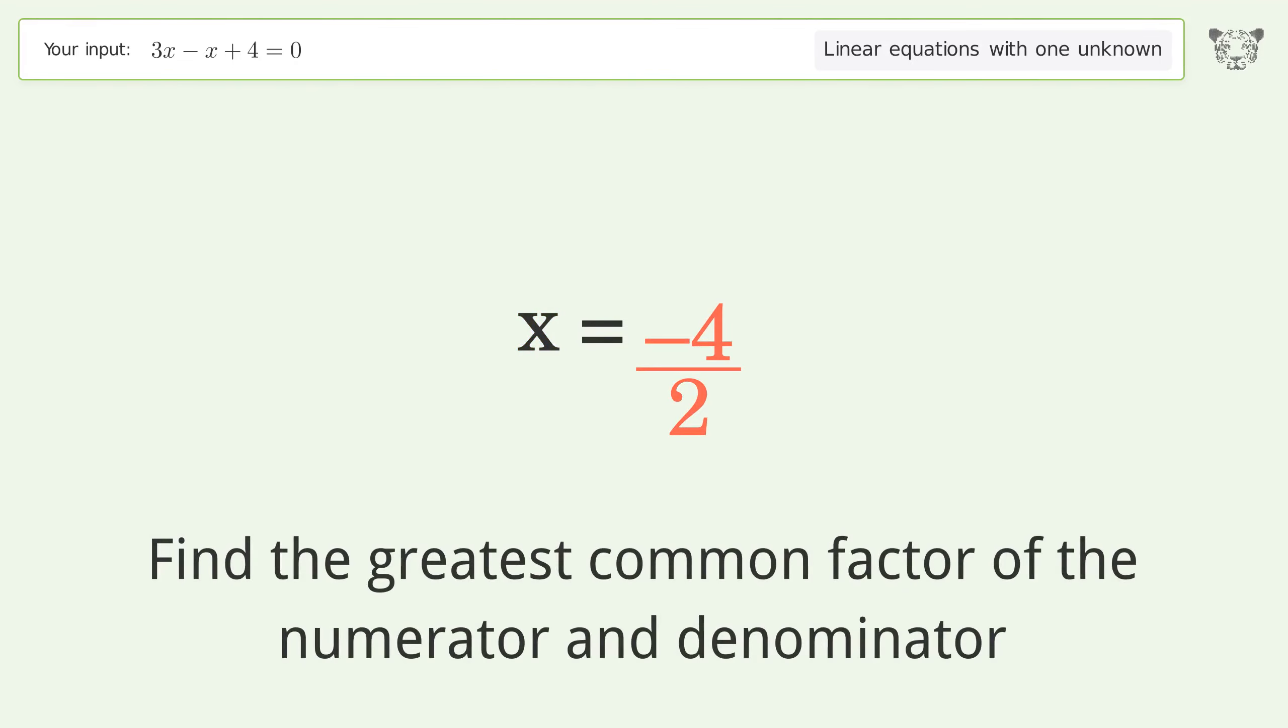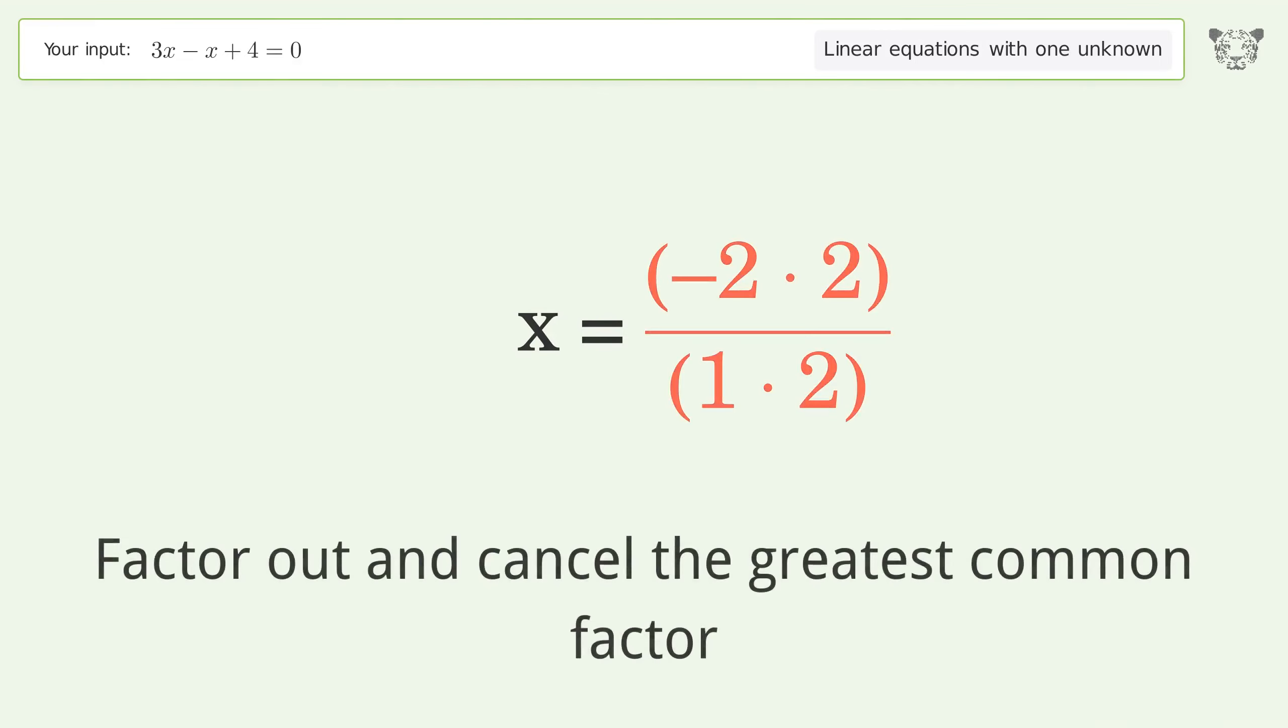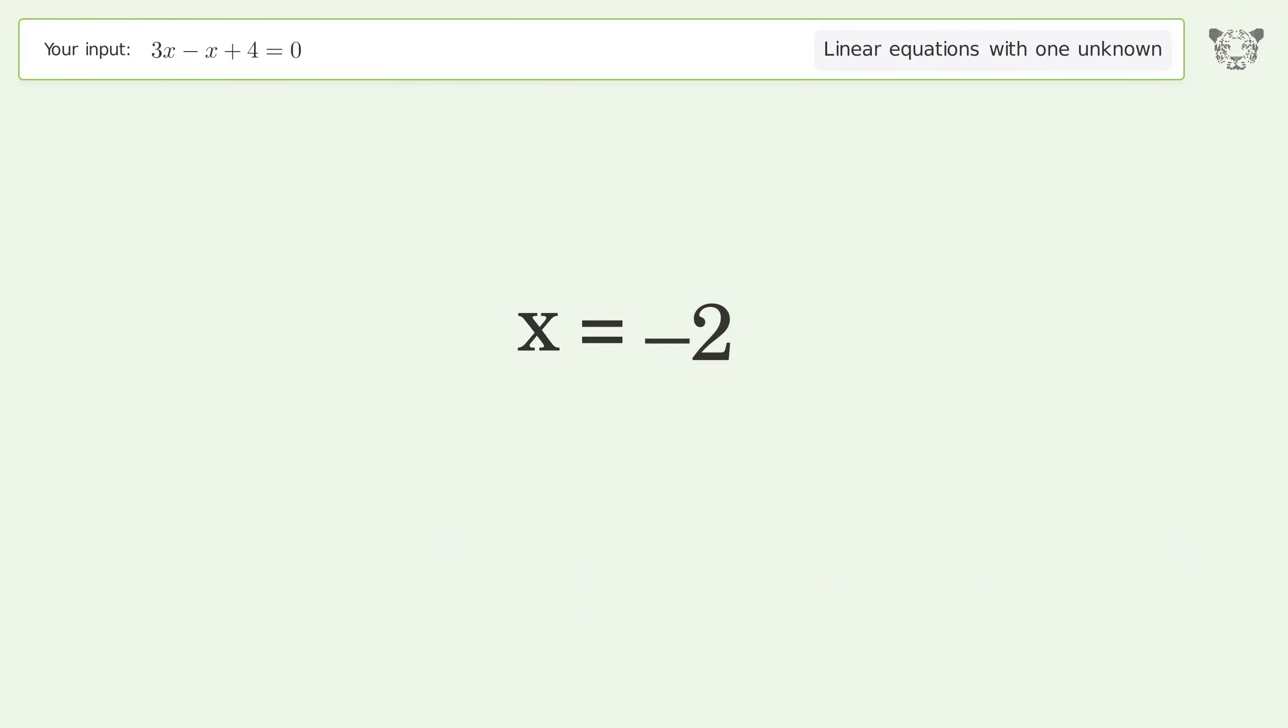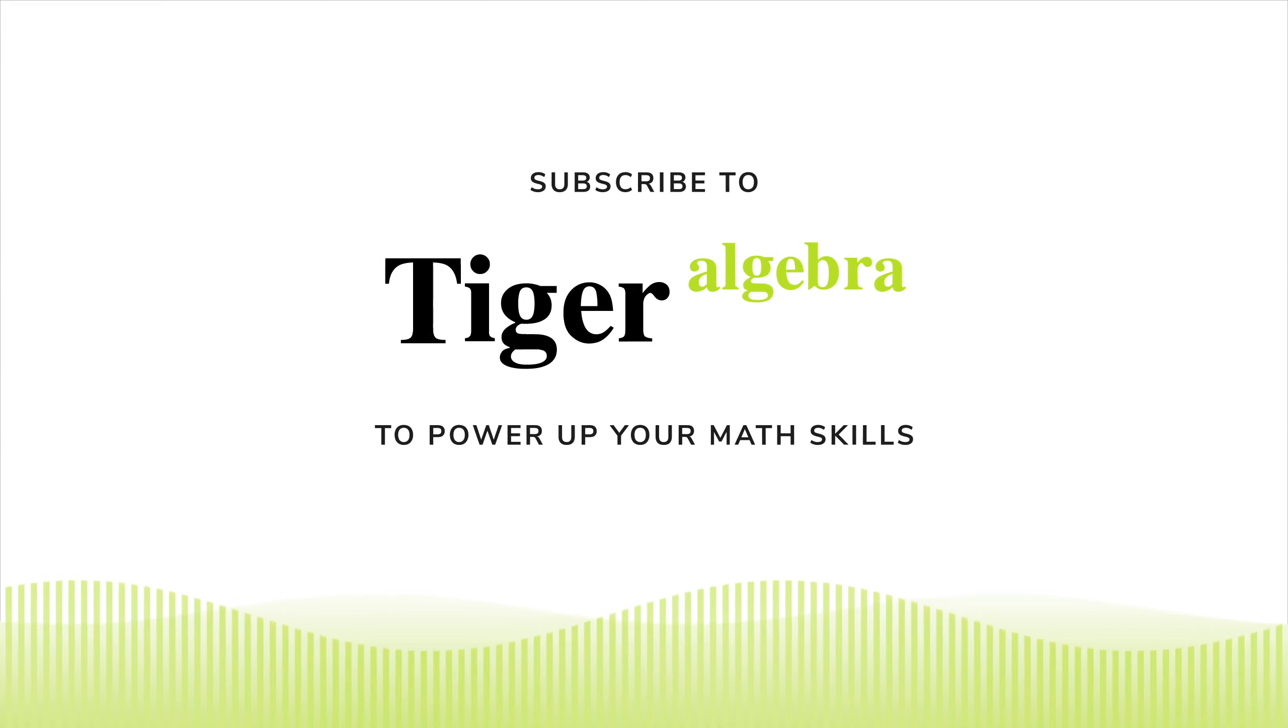Find the greatest common factor of the numerator and denominator. Factor out and cancel the greatest common factor. And so the final result is x equals negative 2.